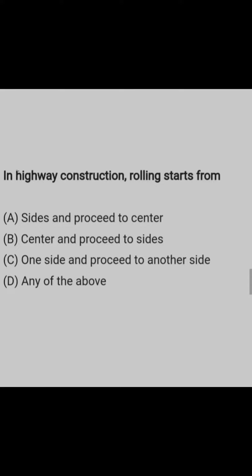In highway construction, rolling starts from option A: sides and proceed to center. Option B: center and proceed to sides. Option C: one side and proceed to another side. Option D: any of the above.